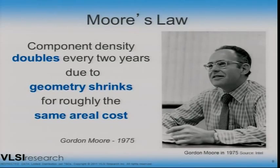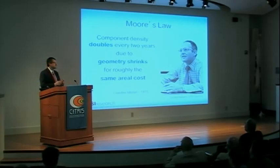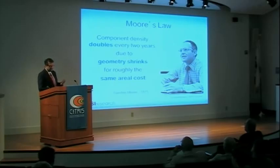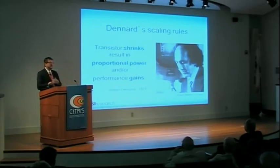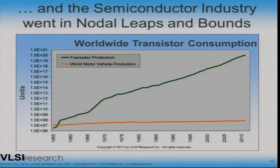Going back to Moore's law — the component density basically doubles due to geometry shrinks at the same aerial cost. The importance of Moore's law was that he added 'same aerial cost.' I consider it to be probably the first work ever done in innovation economics because of that. His original paper was in '65. Then Denard came along in '74 and said when you shrink these transistors, you get proportional power and performance gains, and you can trade them off for each other. The result was what I call shrinkonomics — we went from 5 mils to now moving into 20 nanometers. The benefit has been huge for the industry. Transistor consumption has been growing at amazingly huge rates. The world consumes transistors at a virtually constant rate; the cyclicality comes from variations in price due to capacity and investment fluctuations.